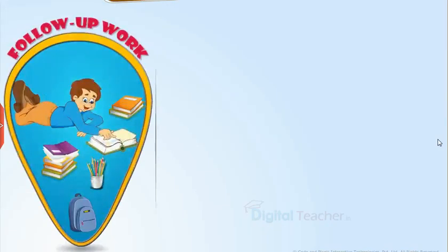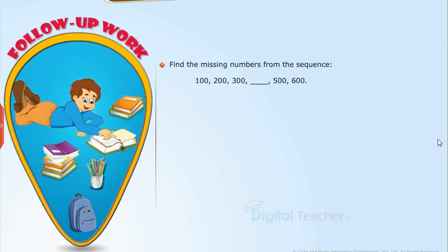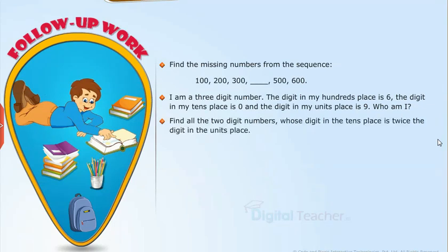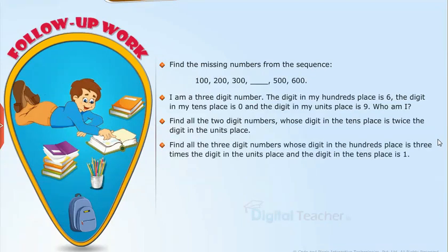Follow-up work: Find the missing numbers from the sequence. I am a 3 digit number — the digit in my 100s place is 6, the digit in my 10s place is 0, and the digit in my 1s place is 9. Who am I? Find all 2 digit numbers whose digit in the 10s place is twice the digit in the units place. Find all 3 digit numbers whose digit in the 100s place is 3 times the digit in the units place and the digit in the 10s place is 1.